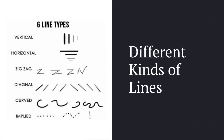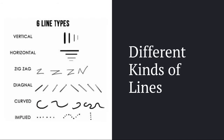Here are some different kinds of lines we use in art: vertical, horizontal, zigzag, diagonal, curved, and implied.